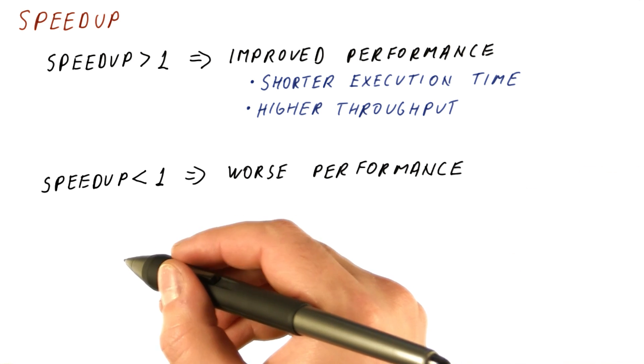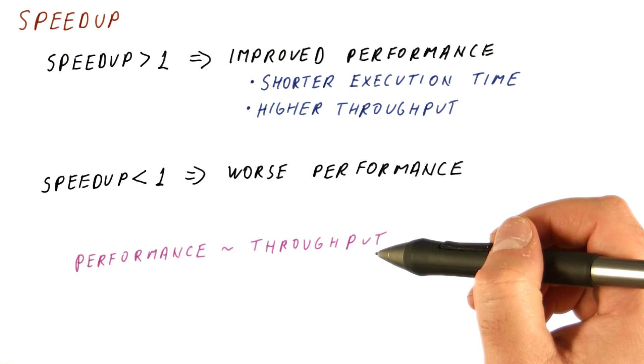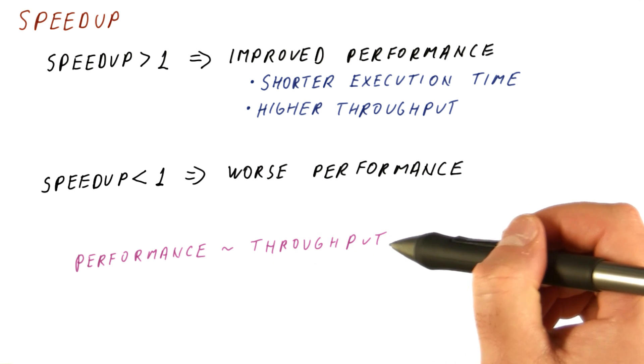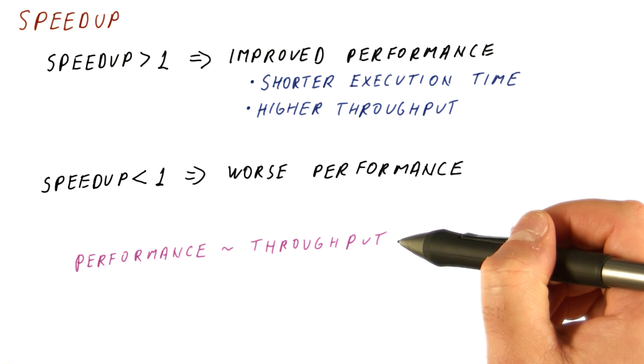And finally, when computing speedup, remember that performance is proportional to throughput. So when computing speedup, we divide the throughput of the new thing with the throughput of the old thing.